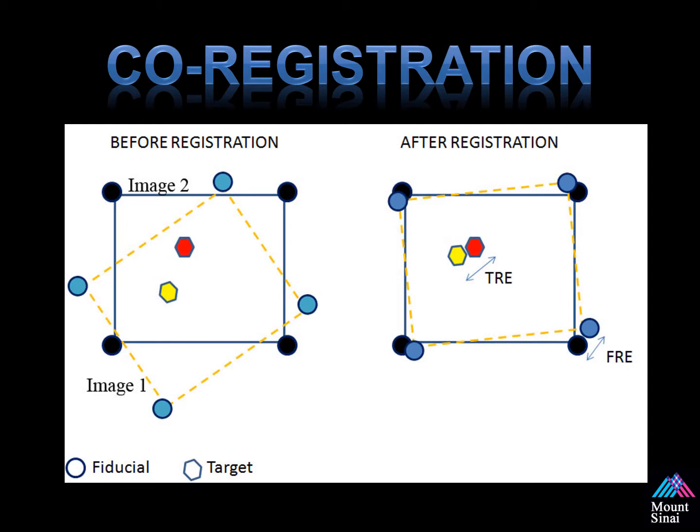The co-registration of two data sets — if you look on the left side of the screen before registration, you see image one and image two. These two images are not aligned. Using the corners, or fiducials, we're able to take that data set and line it up. For surface rendering, we use the triangles as our fiducials, and after lining up the data set, you're able to see the target and the fiducials align, but it's usually not perfect. There's always a degree of target registration error, labeled TRE, as well as the fiducial registration error, represented on the right side of the screen.